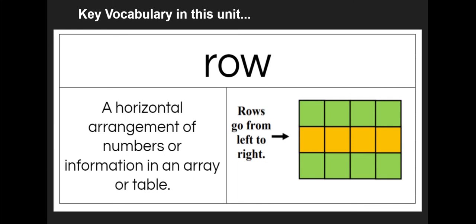Another word we've learned in this unit is row. When we talk about rows in an array, rows go from left to right. It's a horizontal arrangement of numbers or information in an array or table. If you look at the picture, the yellow row is going from left to right. That's a row. There are two green rows, one on top and one on bottom.